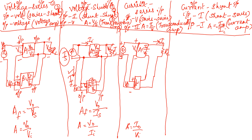For beta of current series: I0 becomes the input and VF is the output. So VF equals beta times I0. The gain with feedback equals I0 divided by source voltage Vs.